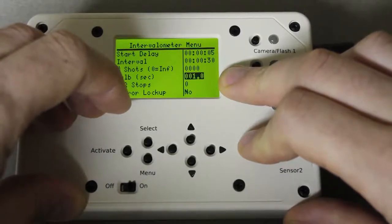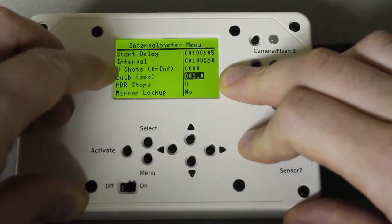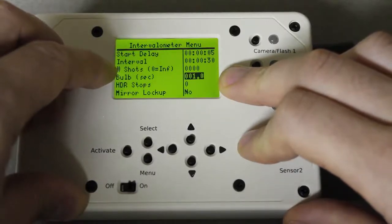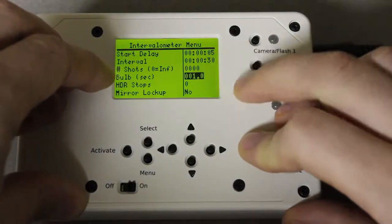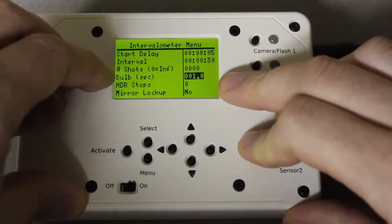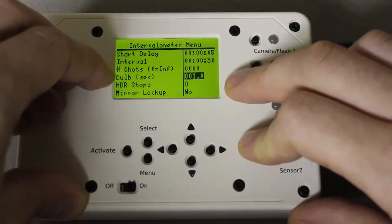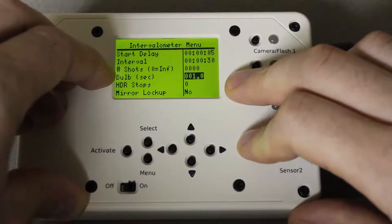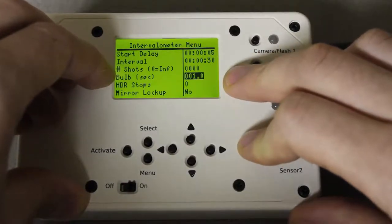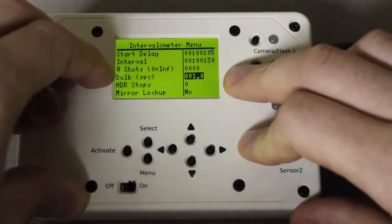If you set the camera to bulb mode then this will work similar to how bulb works on your camera. If you set this to one second then your shutter will be open for one second. If you set it to 0.1 seconds your shutter will be open for 0.1 seconds if it's in bulb mode. This can be useful in low light situations.